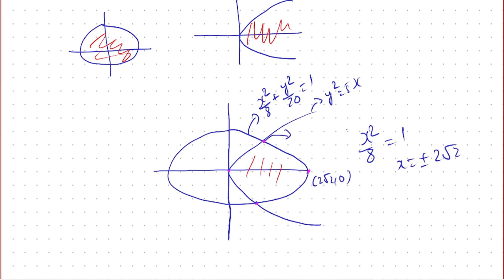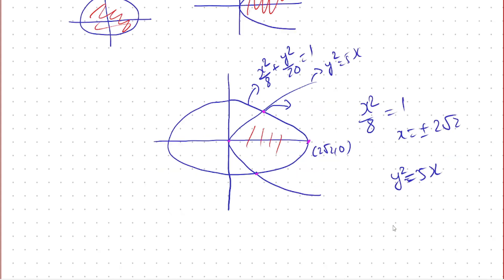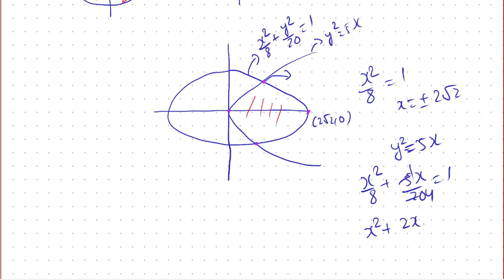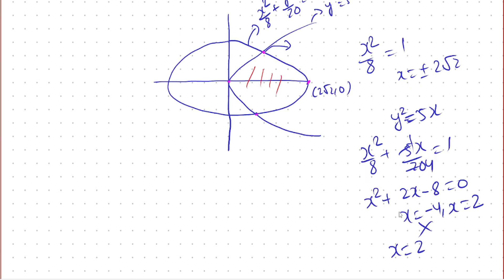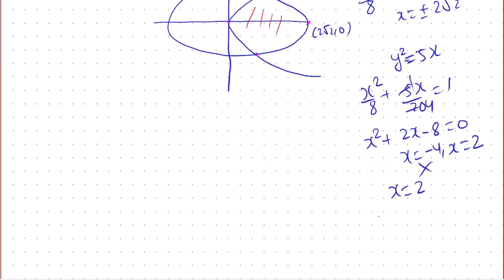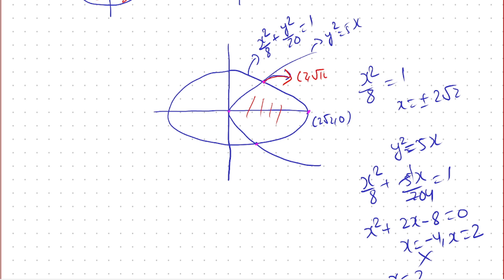Now we need to find the intersection point of the parabola y² = 5x and the ellipse. Substituting y² = 5x into the ellipse equation gives x²/8 + 5x/20 = 1. Simplifying yields a quadratic with solutions x = −4 and x = 2. Since x must be positive, x = 2. Substituting back gives y² = 10, so y = ±√10. These intersection points are (2, √10) and (2, −√10).